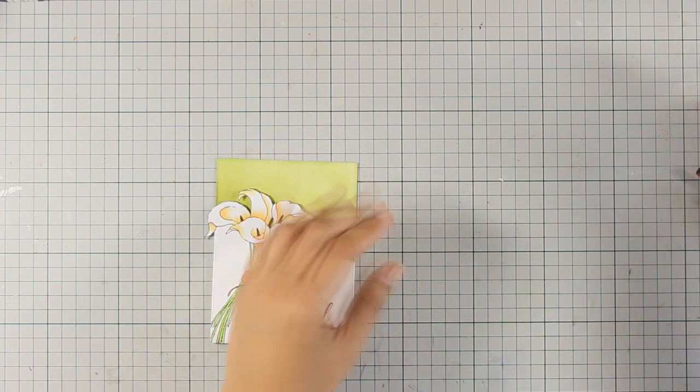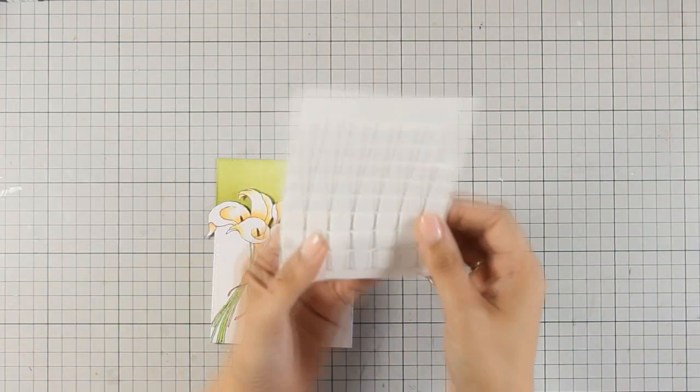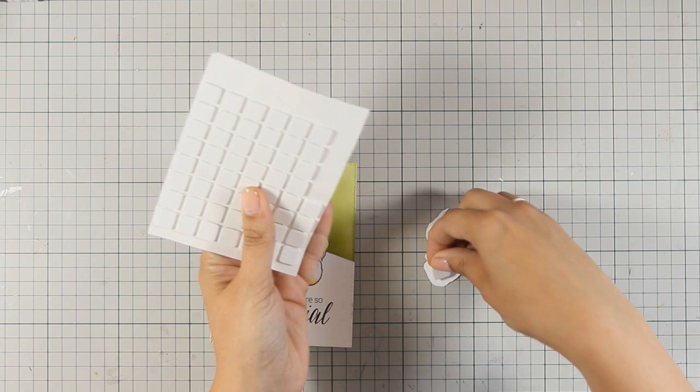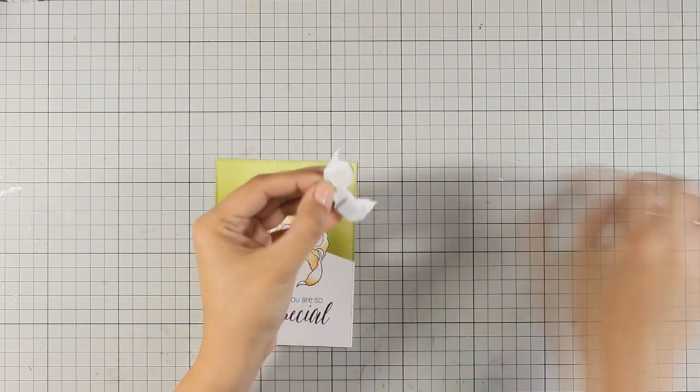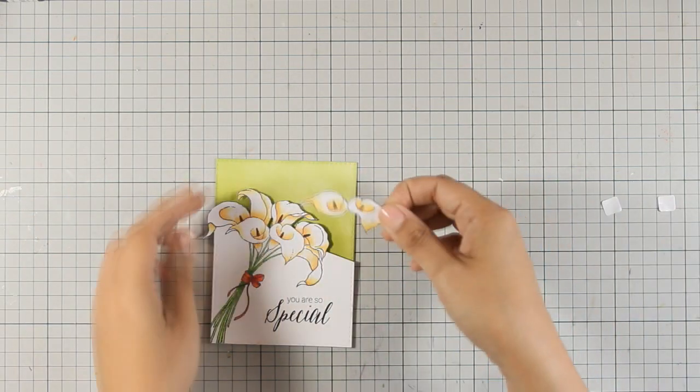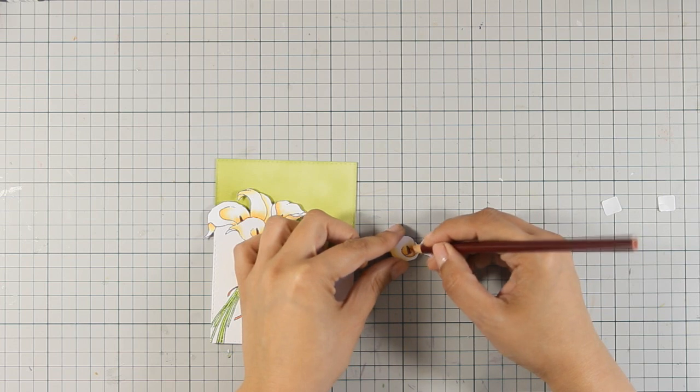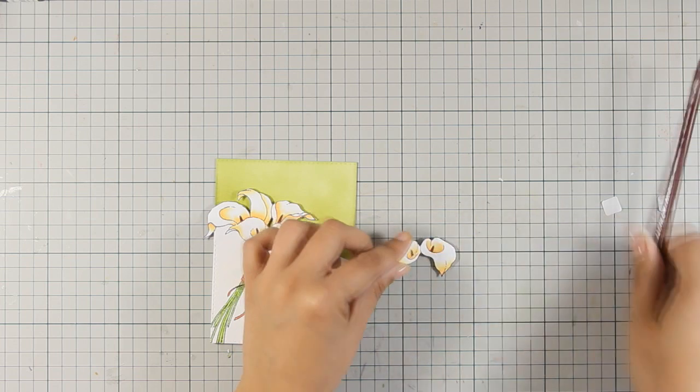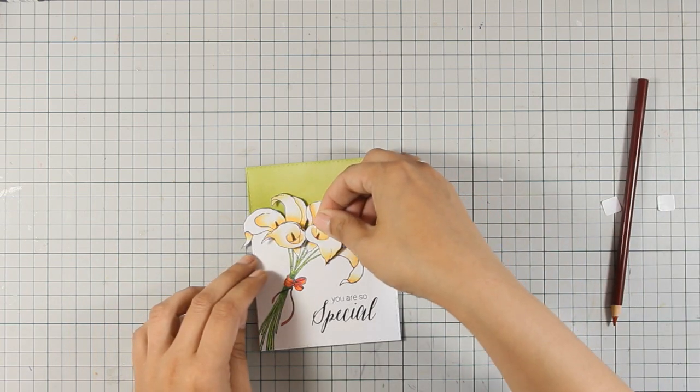So the main panel is ready now. I am going to pop up the set of flowers that I have cut out, again with foam squares, and you will see that the finished result is going to be really dimensional with all those flowers one on top of the other.